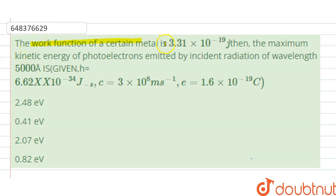The work function of a certain metal is 3.31 × 10^-19 joule. Then the maximum kinetic energy of photoelectrons emitted by incident radiation of wavelength 5000 angstrom is how much? Options are here.